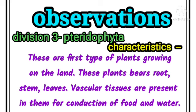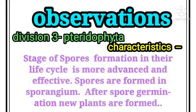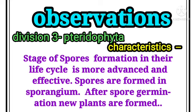Division 3 — Pteridophyta characteristics: these are the first type of plants growing on land. These plants bear roots, stem, and leaves. Vascular tissues are present in them for conduction of food and water. The stage of spore formation in their life cycle is more advanced and effective; spores are formed in sporangia, and after spore germination new plants are formed.